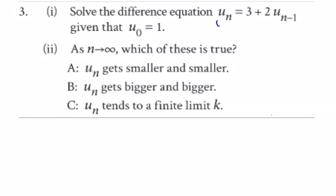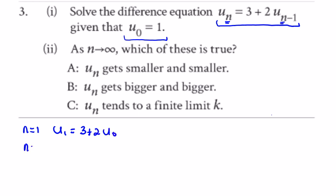In question 3 we have this difference equation and we're told u₀ is equal to 1. Let's have a look at creating uₙ. First, when n is equal to 1 we get u₁, which is equal to 3 plus twice u₀, putting 1 in for n and 1 in for u₀.